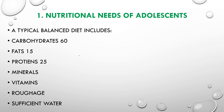Let's discuss which food groups give us these nutrients. Cereals and grains provide carbohydrates, vitamins, minerals, and roughage. Pulses such as dals provide carbohydrates, proteins, minerals, and vitamins.